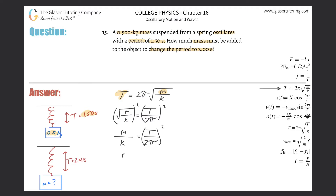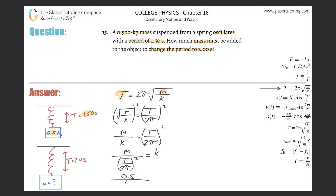Now I can do a quick substitution: k equals m divided by (T over 2π), that whole thing squared. Plugging in: the mass is 0.5, the period is 1.5 seconds, all divided by 2π, that whole thing squared. So it's 0.5 divided by (1.5 divided by 2π) squared. And here we get about 8.77 newtons per meter. So that's the spring constant.